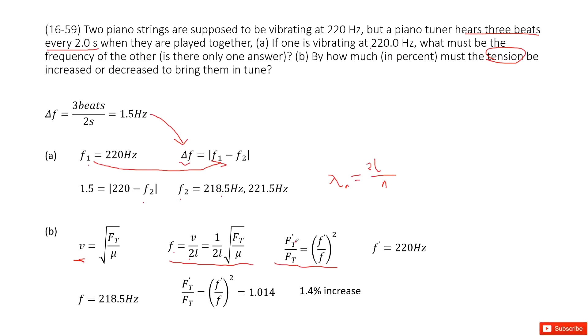And we can write the function FT plus divided by FT is f the frequency plus divided by frequency squared. Now this, what is FT plus? This is the tension after adjust. FT is the tension now, right?